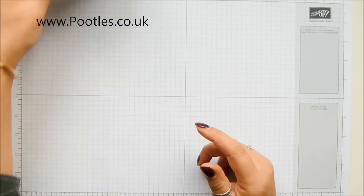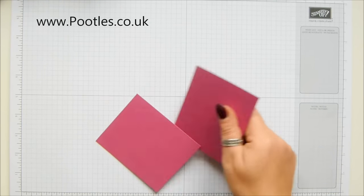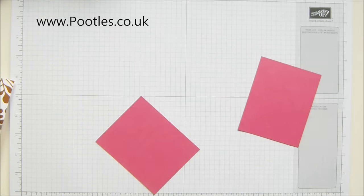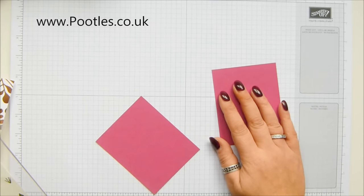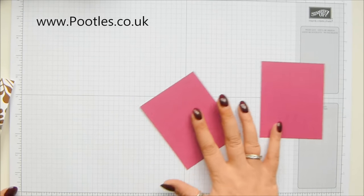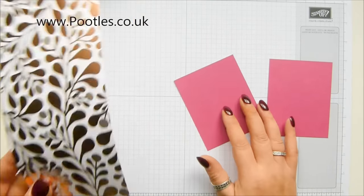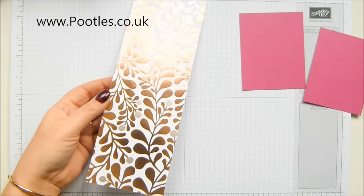I've got Year of Cheer here. You need two pieces of cardstock that measure three and a quarter by four inches, so eight and a half by ten centimeters, and designer series paper that is three and a half by ten inches, which is nine by twenty-six centimeters.